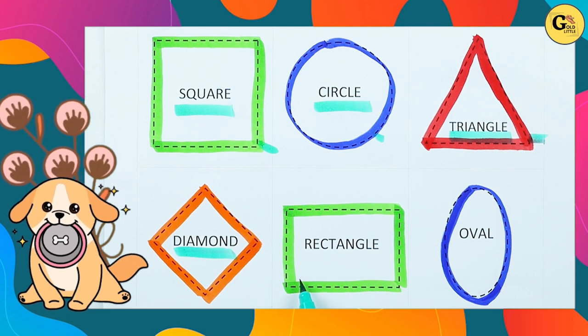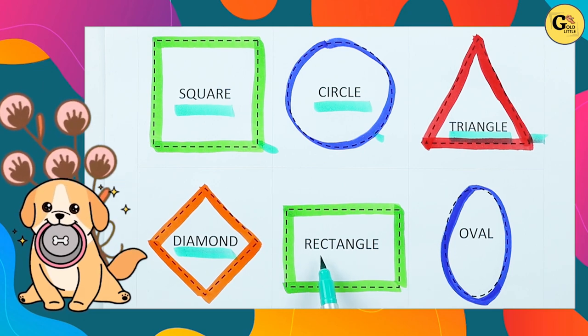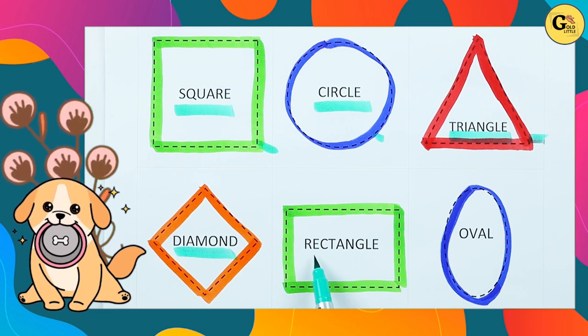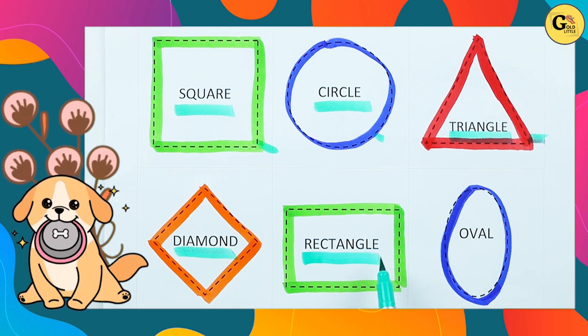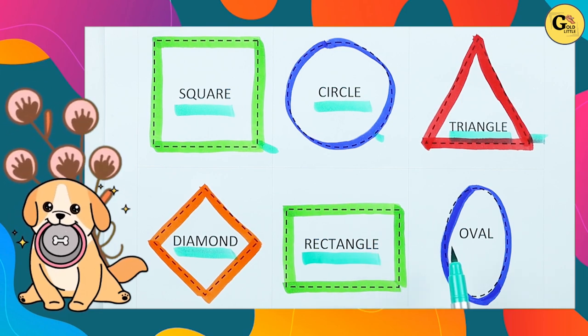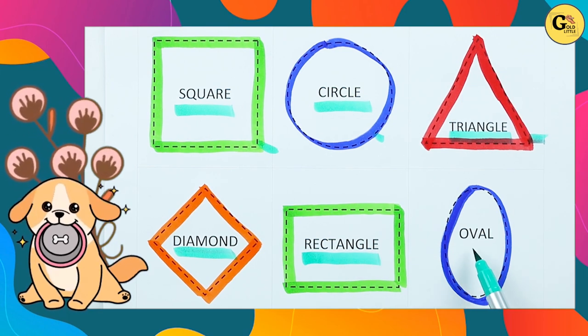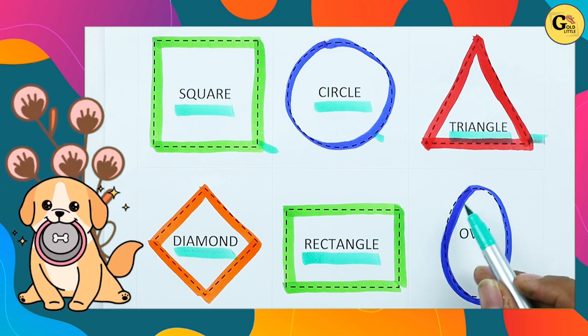Which shape is this? Rectangle. R-E-C-T-A-N-G-L-E. It's a rectangle with green color. Which shape is this?